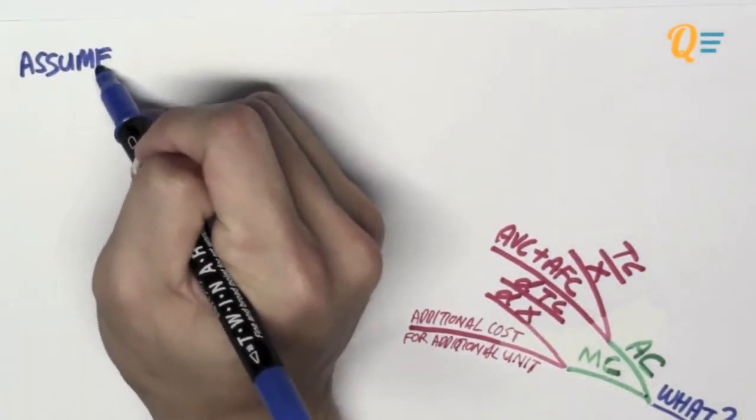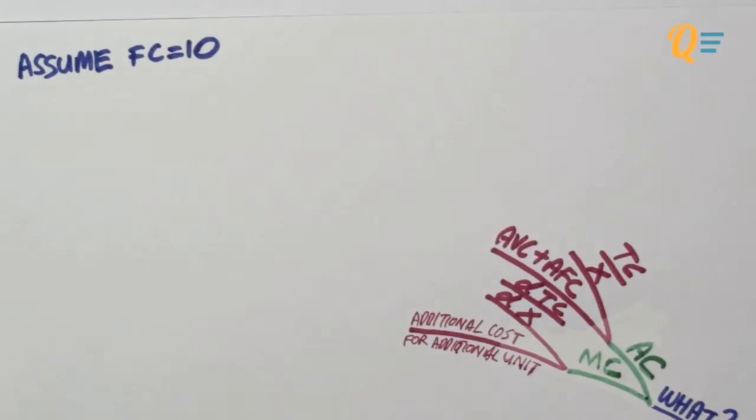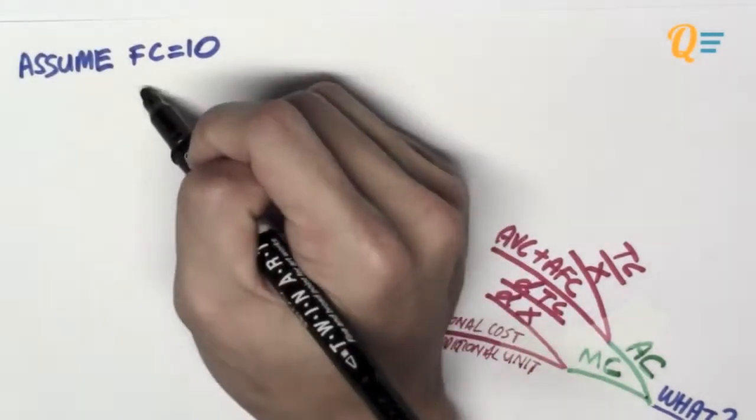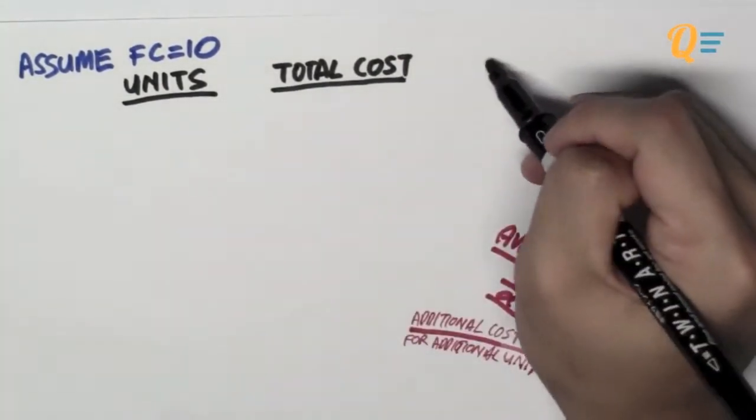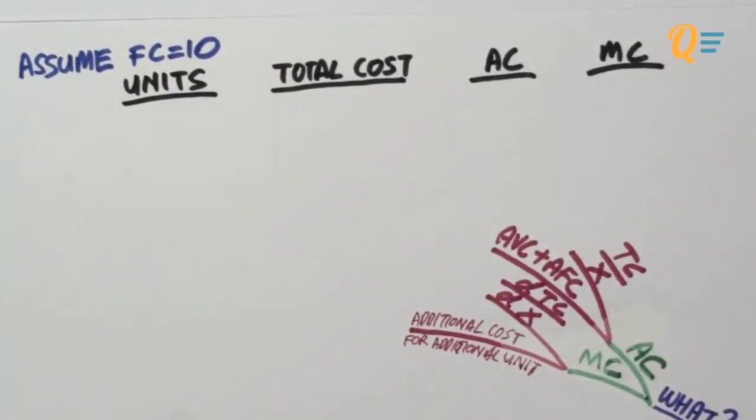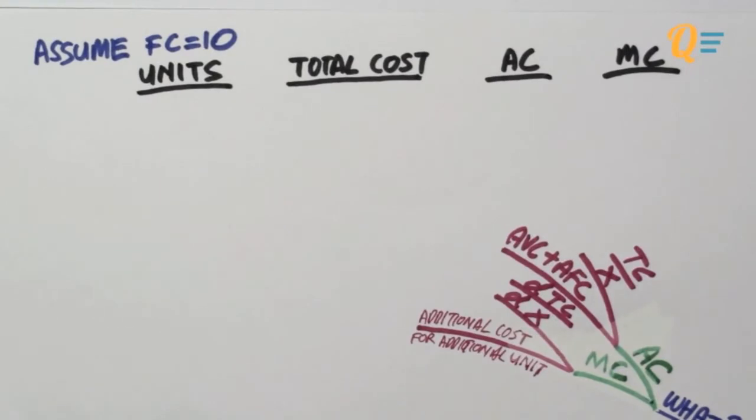Let's use a numerical example. So let's assume that the fixed cost a company faces is going to be 10. So we're going to analyze the amount of units produced, what is the total cost for producing that much units, what's the average cost and marginal cost for producing that particular number of units. So let's say we have 0, and of course when you produce 0 units, whether you produce or not, you're going to be facing a fixed cost of 10. So that's a fact. The fixed cost has been incurred when you started the company.